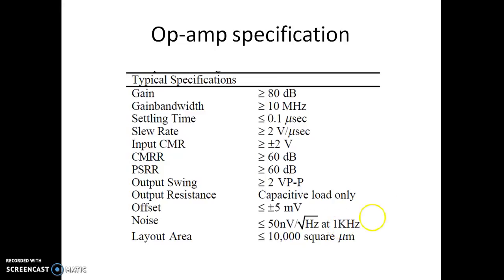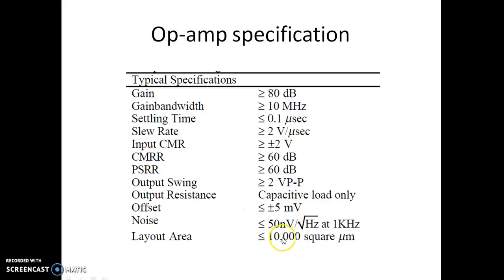The output swing should be sufficient to get a full output, typically 2 V peak to peak. The output should be able to accept a capacitive load. The offset voltage should be very small, at plus or minus 5 mV. The noise should be less than or equal to 50 nV per root hertz at 1 kHz. The layout area should be less than 10,000 square micrometers. These are the typical specifications considered when designing an op-amp.